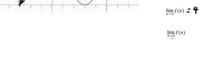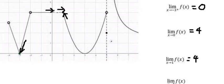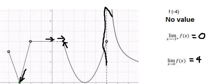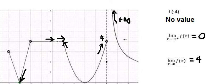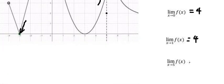The last one: x approaches number five, which is right here. On the right they will go to positive infinity, and on the left they go to number four. We can see that the left and right limits are not the same, so the limit here does not exist.